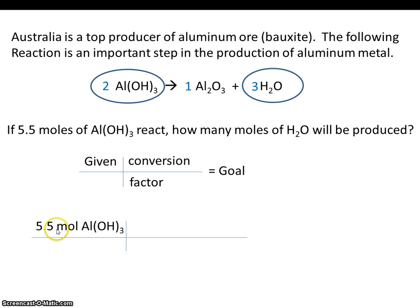Because we have moles of aluminum hydroxide down here, we'll also need moles of aluminum hydroxide down here. Notice that we didn't pick one mole of aluminum hydroxide. We picked 2, because 2 is the coefficient from the balanced equation. And 3 moles of water goes in the numerator.